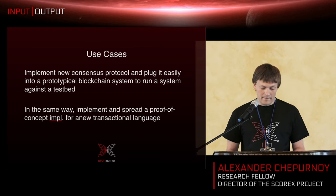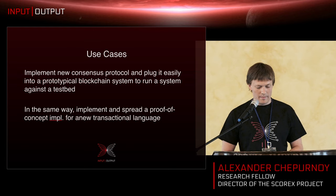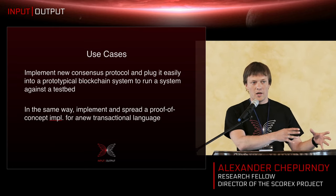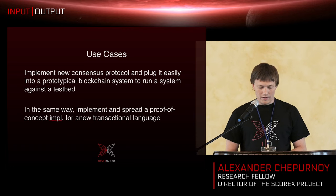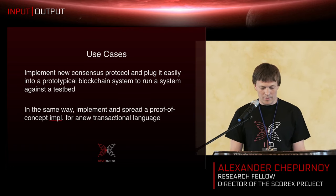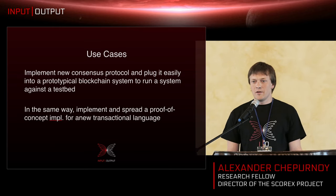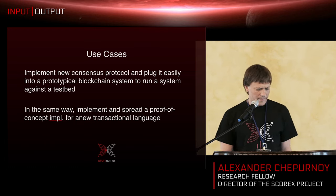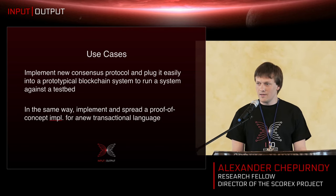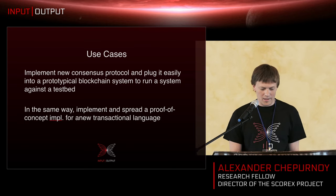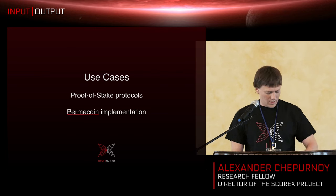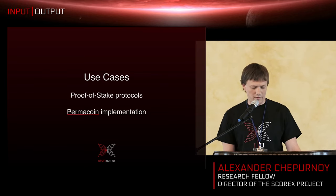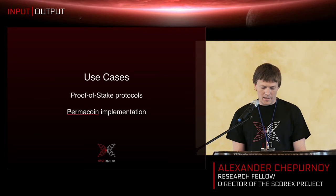Another idea you might want to implement is a different transaction language. You want to take an existing proof of stake protocol, say Bitcoin's, and then change the transactional part of the blockchain system. For me there was a practical need — I started Scorex with a use case in mind: to see some proof of stake protocols in action, get metrics on existing proof of stake protocols, namely NXT and a few others.